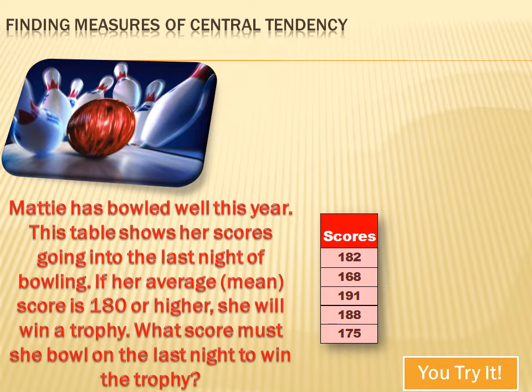Maddie's a pretty good bowler. She's had scores in five trips to the bowling alley, and she's got one more trip. She needs to average 180 after all six trips to the bowling alley in order to win a trophy. How do we figure out what she needs on that last trip?